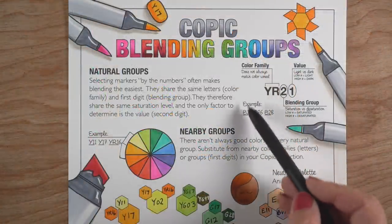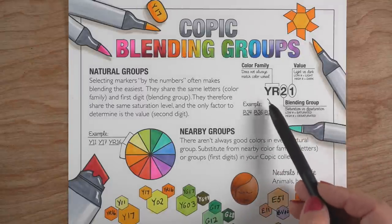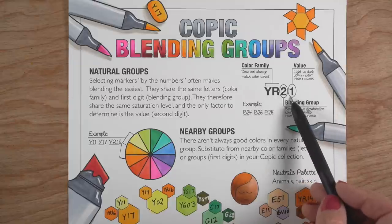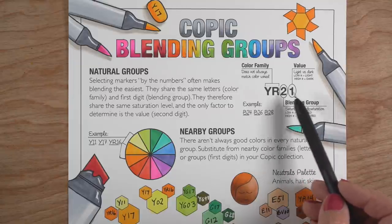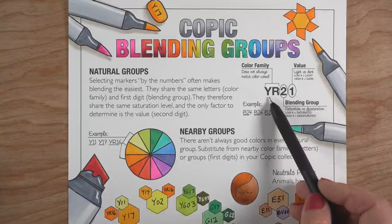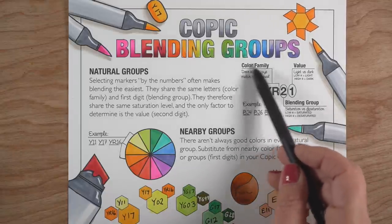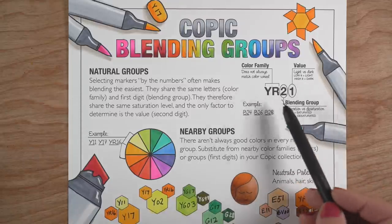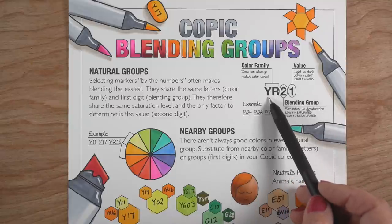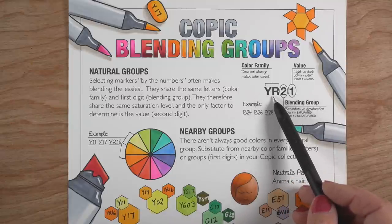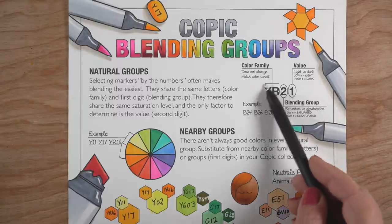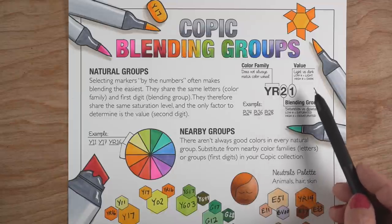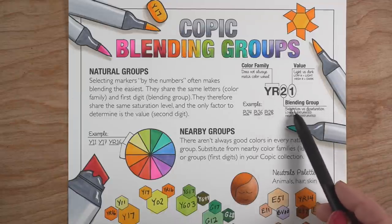Let's talk about what's on this sheet. This section covers the naming convention — there are letters and numbers, either one or two letters followed by the numbers. The letters indicate the color family: R for red, B for blue, Y for yellow, YR for yellow-red. They don't call it orange because that would be O, which would be weird. So it's yellow-red. The numbers that follow have a pattern — it's not 'twenty-one,' it's 'two-one.'